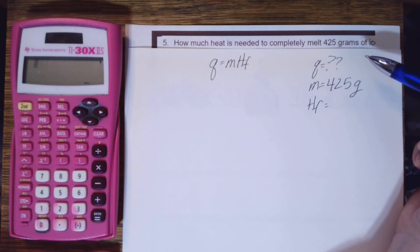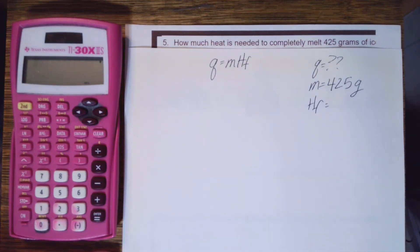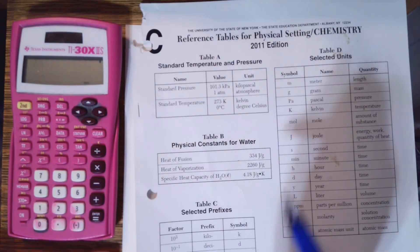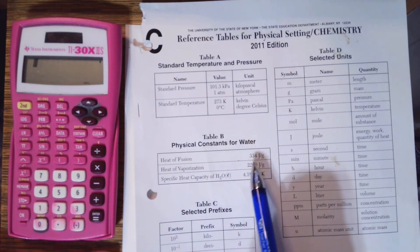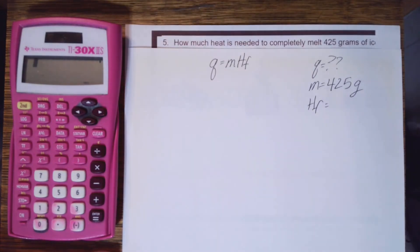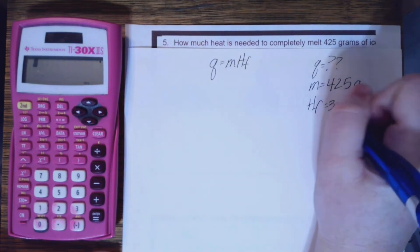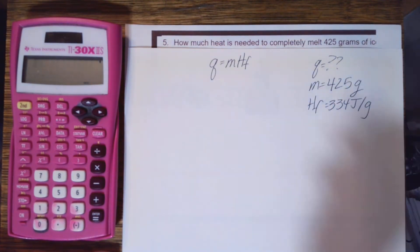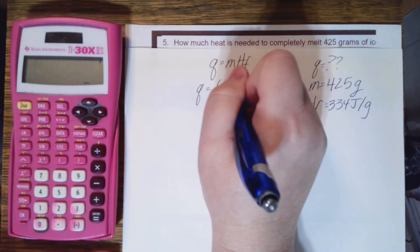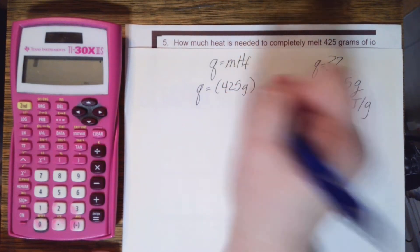Ice is water but as a solid, so I can go to table B. The heat of fusion of water is 334 joules per gram. So 334 joules per gram. Let's plug it into the equation.